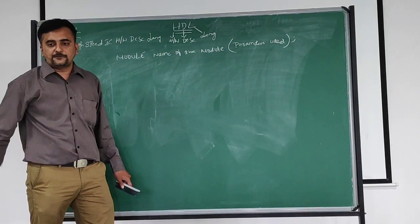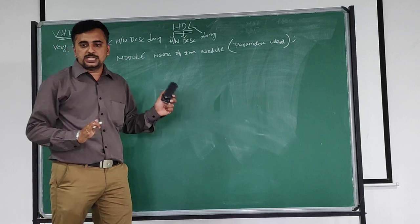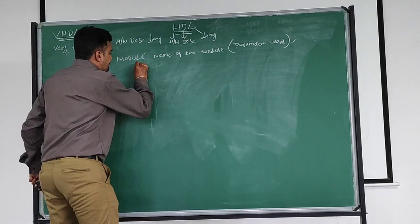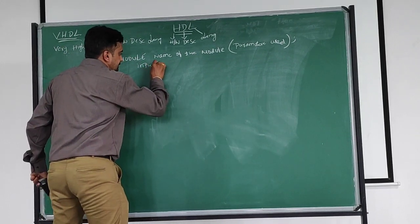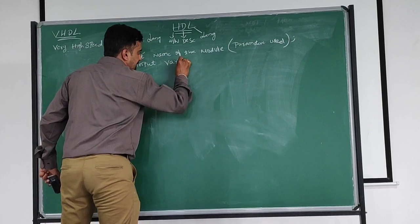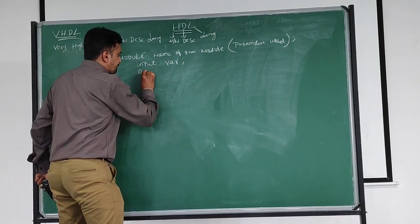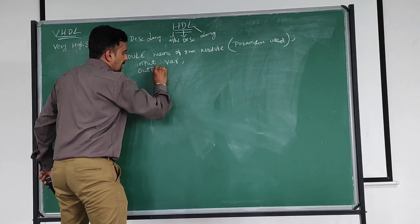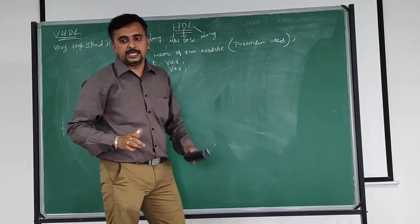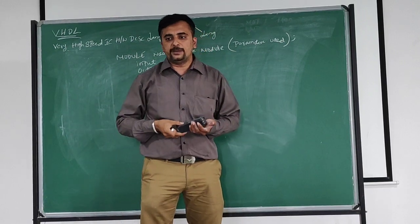What is the name of the module? Here parameter view. Parameter view. Close the bracket, semicolon. After this parameter view, just you have to write here input variable, semicolon, input variable. Next, after this, output variable. Input variable, output variable.